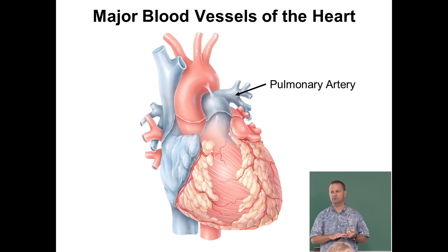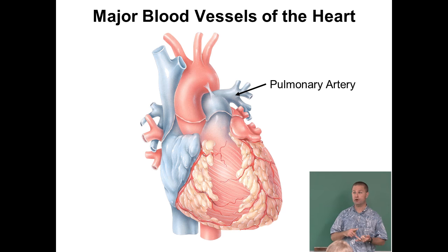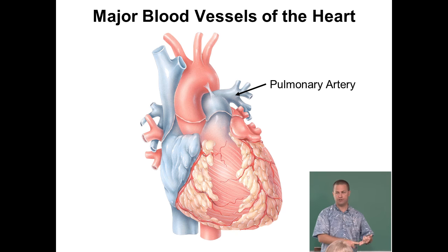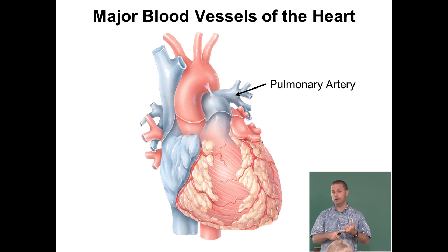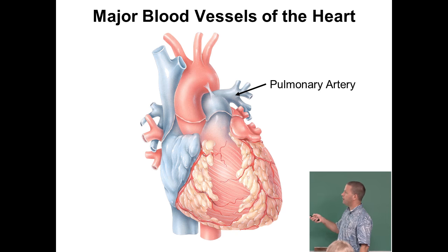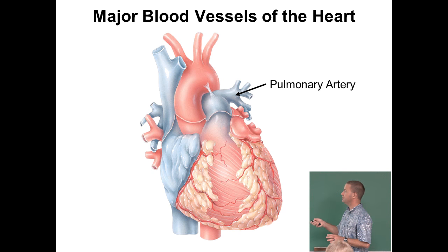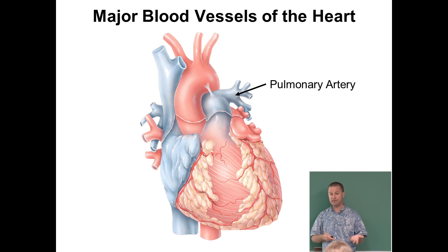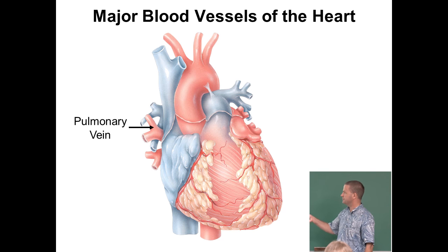We also have the pulmonary artery. Remember: arteries carry blood away from the heart; veins carry blood toward the heart. A lot of people think arteries always carry oxygenated blood, but here's a case where that's not true. The pulmonary artery carries deoxygenated blood away from the right ventricle up through the pulmonary trunk, which branches into left and right pulmonary arteries going to the lungs.